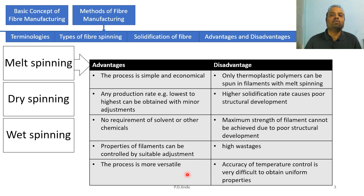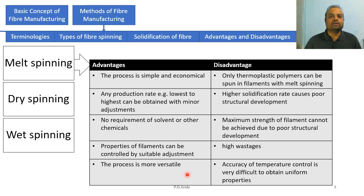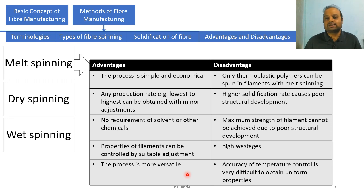The last advantage of melt spinning is that the process is more versatile, meaning more flexibility. One can create filaments from a micro denier to a few deniers — the filament can be as thin as a micron or as thick as a centimeter. So the process is more versatile.